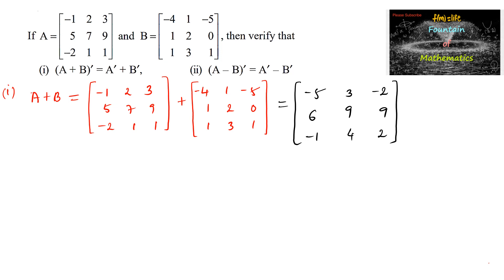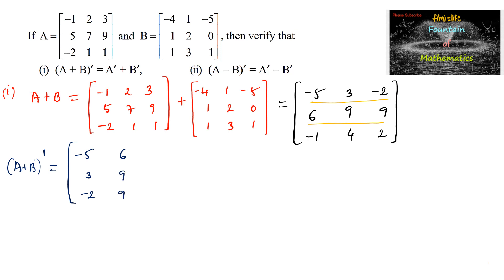The transpose of this matrix — (A+B) transpose — is found by interchanging the rows and columns. The first row becomes the first column: −5, 3, −2. The second row becomes the second column: 6, 9, 9. The third row becomes the third column: −1, 4, 2. So this is (A+B) transpose.